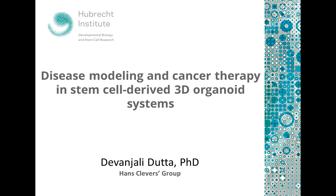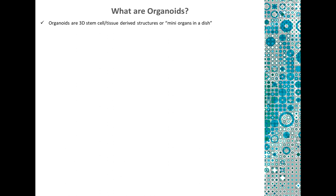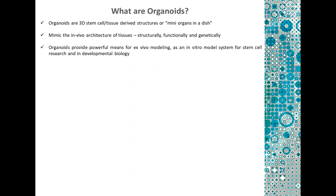Dr. Dutta, you may now begin your presentation. Thank you so much for the introduction, and thank you all for joining me for this webinar. I'm a postdoc in Hans Clevers's group, and today I'll be talking about how the 3D organoid system can be used for disease modeling as well as cancer therapy. So what exactly are organoids? Very broadly speaking, organoids are 3D stem cell tissue-derived structures, or as we call them, the mini-organs in a dish. These mimic the in vivo architecture of tissues structurally, functionally, as well as genetically.